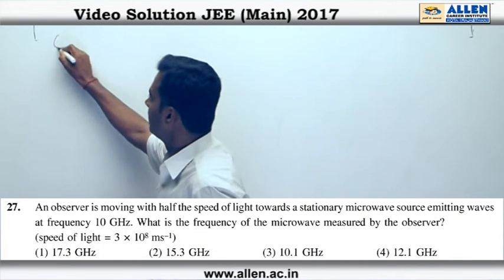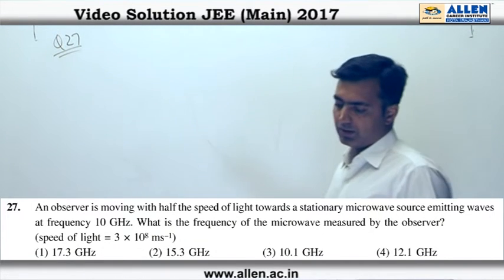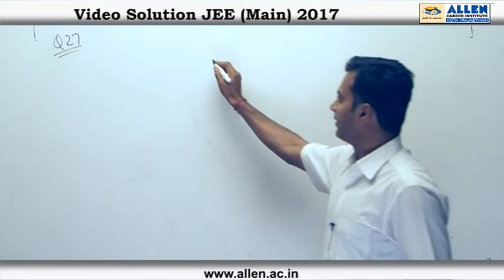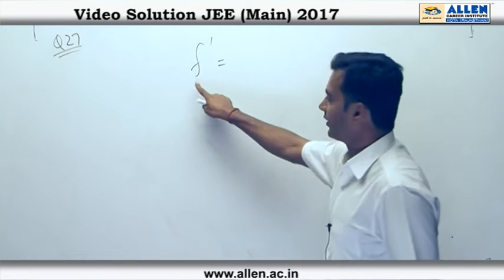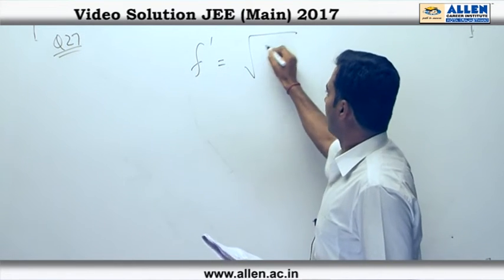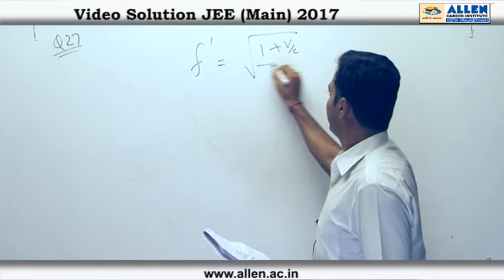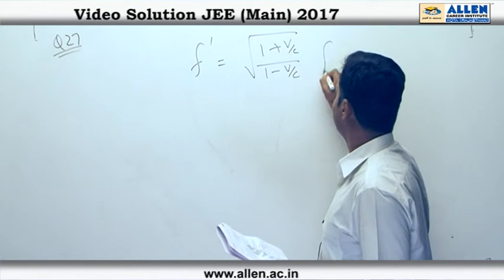Question 27, now applying Doppler's effect for light, this is what we have f dash which is the apparent frequency equals to 1 plus v by c upon 1 minus v by c into f actual